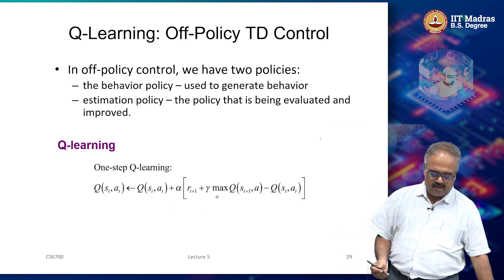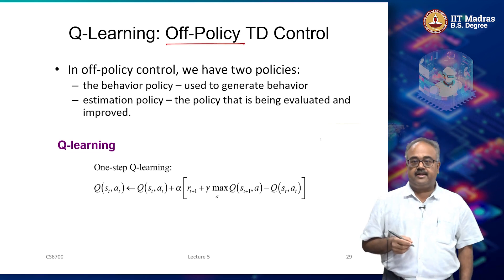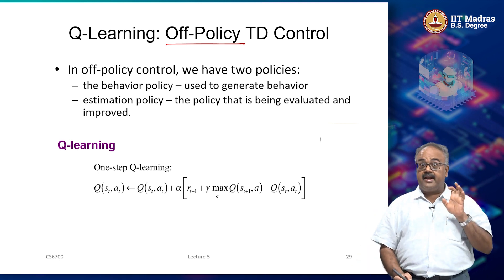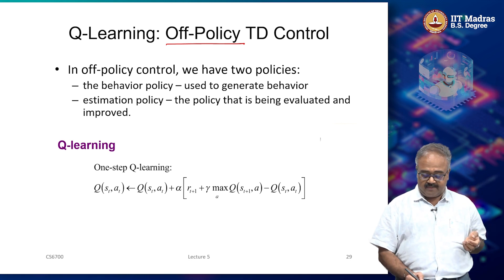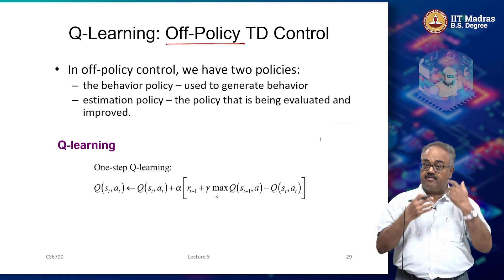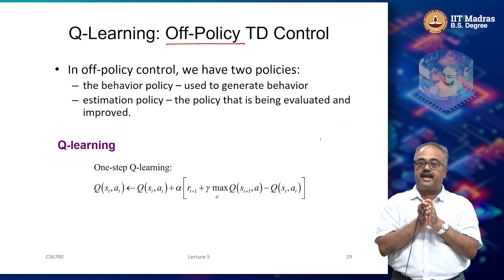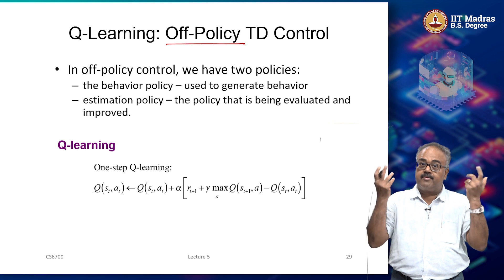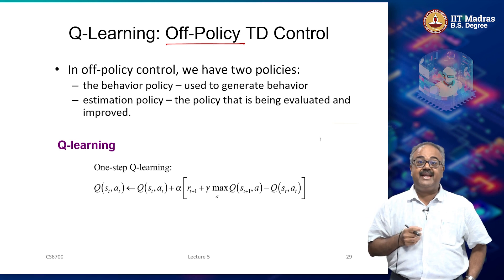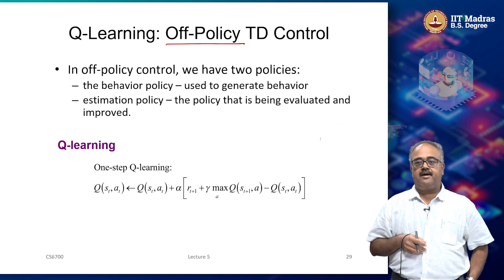Looking at the Q-learning update: Q-learning is sometimes called an off-policy TD control algorithm. What we are actually evaluating is the greedy policy — we look at what is the max going forward. We are not looking at the actual behavior action; we are looking at the optimal, greedy way to behave. So while computing the value function for greedy behavior, we are actually behaving according to some other epsilon-greedy policy in the world.